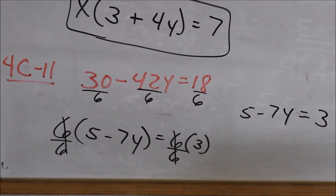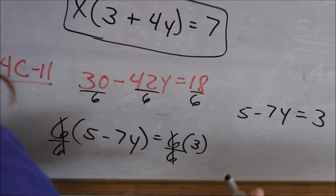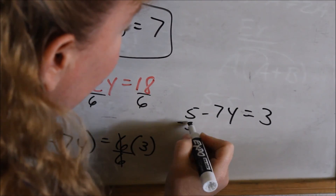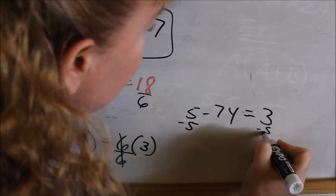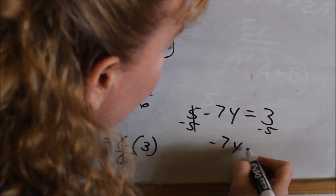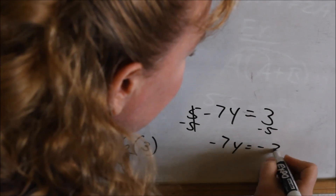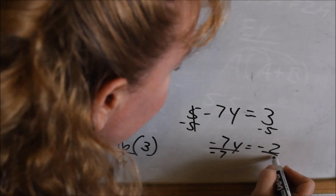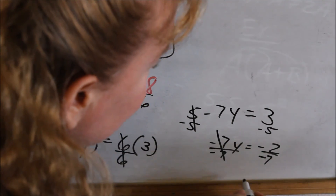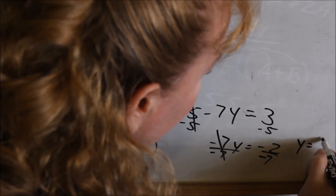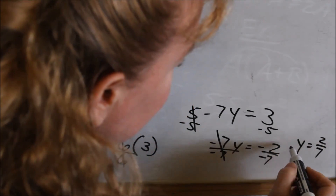Now you can solve this with what you've already learned: whole numbers on one side, letters on the other. 5 is positive, so to move it we subtract — negative 7y equals 3 minus 5, which is negative 2. Divide both sides by negative 7: that cancels, and a negative divided by a negative is a positive, so y equals 2 sevenths.